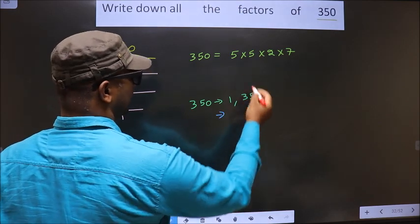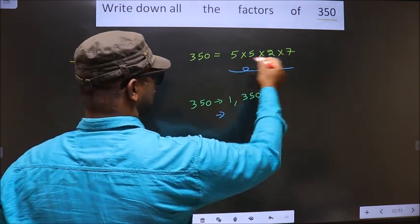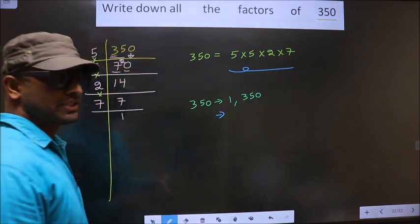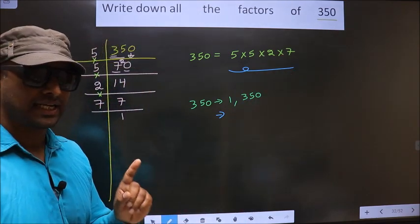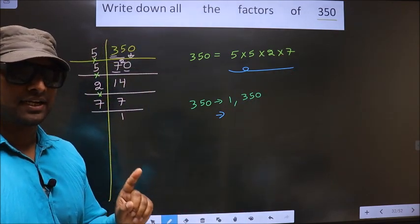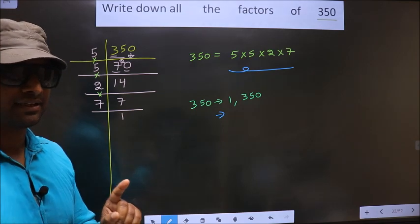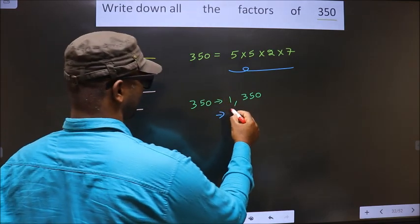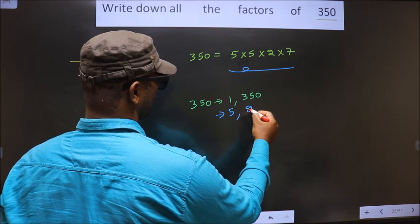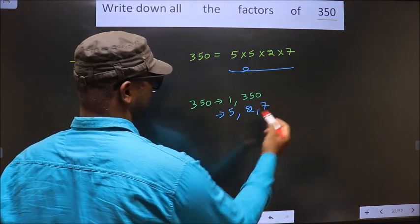Now, from these numbers, you select one different number at a time. Like that, how many numbers do we get? We get 5, 2, and 7. That's it. Next.